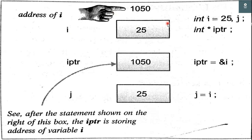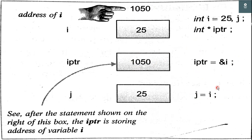Then we have a variable named j of type integer. After this we create a pointer of type integer called iptr. Since a pointer is also a variable, a block is also given to iptr. We then assign the address of i to iptr — AND of i is assigned to iptr — so iptr now holds the address of i, which is 1050. After this, j is assigned the value of i, not the address. Therefore j becomes 25, because the value of i is 25.